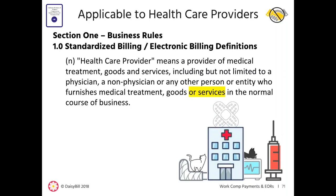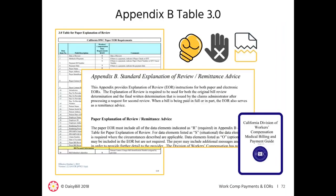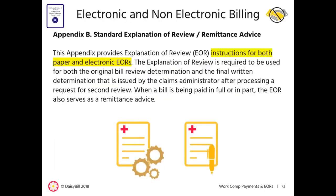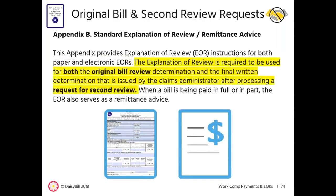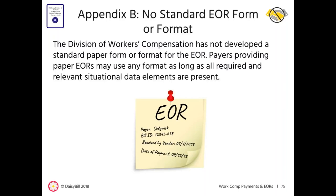The DWC guide has detailed rules that claims administrators must follow when paying Workers' Comp bills. Failing to follow these rules is a breach of duty by the claims administrator. The guide applies to bills submitted by healthcare providers, defined as providers of medical treatment, goods, or services. Appendix B of the guide lists the specific informational requirements for an EOR, and these requirements apply to both paper and electronic EORs. Appendix B also explicitly states that there is no standard paper form or format for EORs — as long as all required information is included, the EOR could even be handwritten on a Post-it.